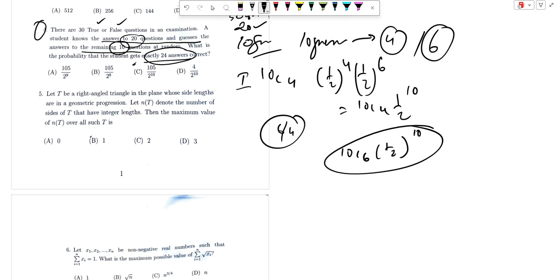Case 1 and case number 2. Since both cases give 24 correct answers, we need to add the probabilities. So here, 10C4 plus 10C6, adding probability case 1 plus 2.